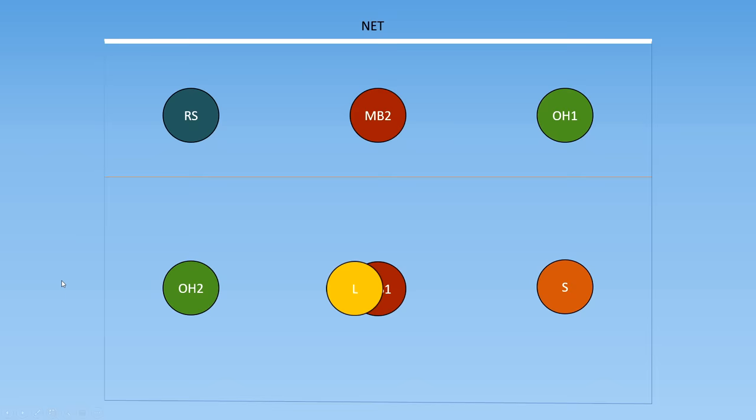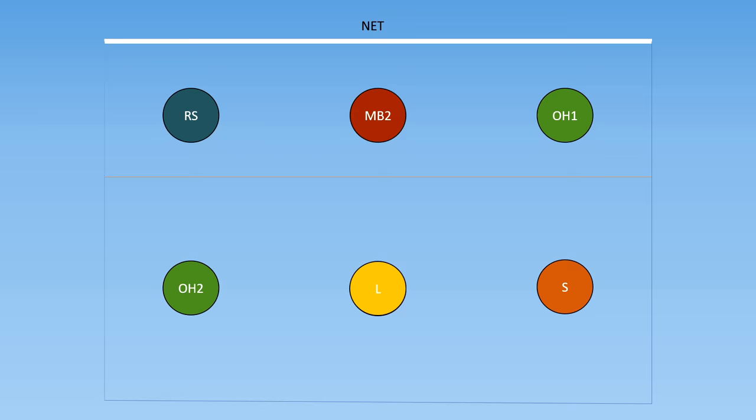There are two concepts that you need to know before we delve into the actual rotations. The first is the actual rules of rotation, which states that players' positions on the court are determined by the players adjacent to them. For example, here we have the setter who is next to the outside hitter and the libero, and she is not allowed to pass in front of the outside hitter or to the left of the libero. If she did that, she would be considered out of rotation.